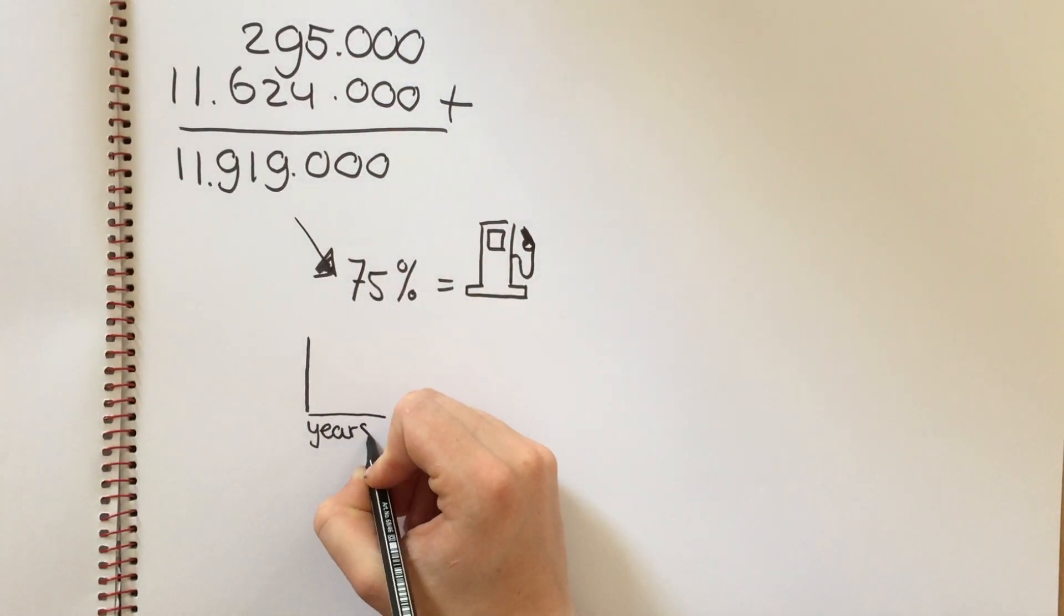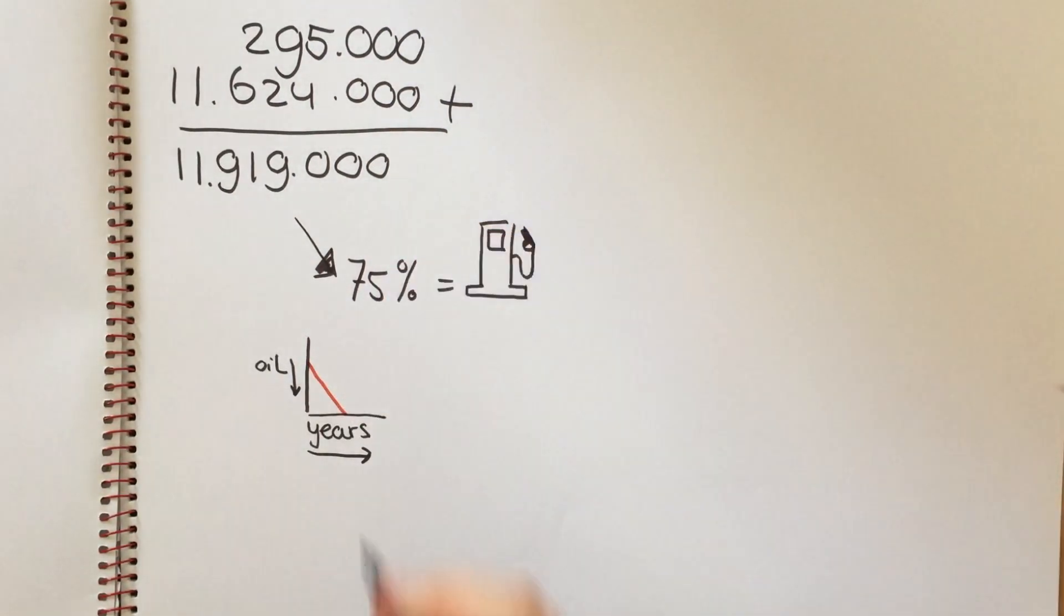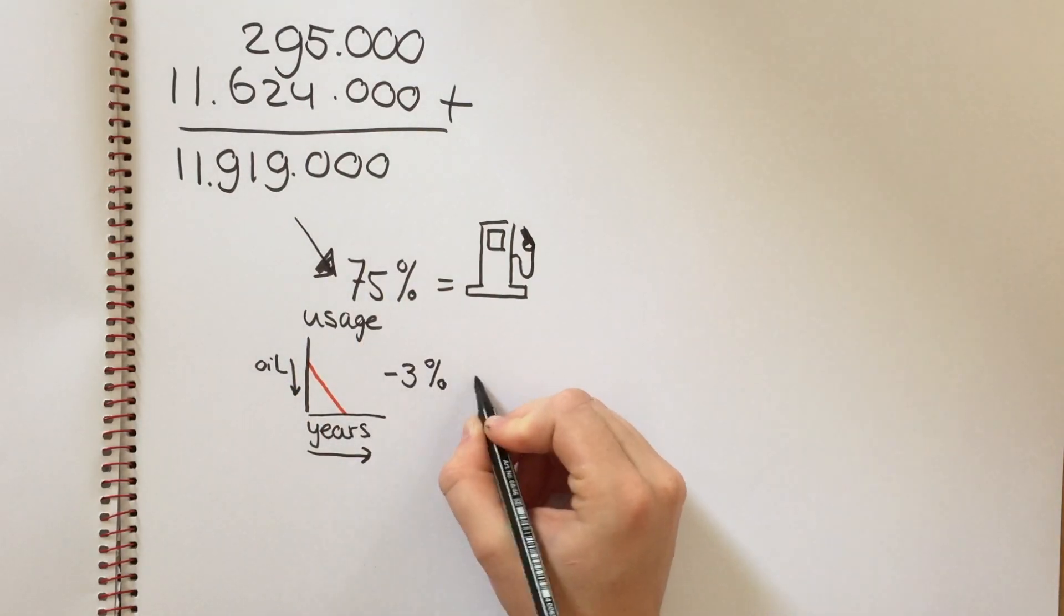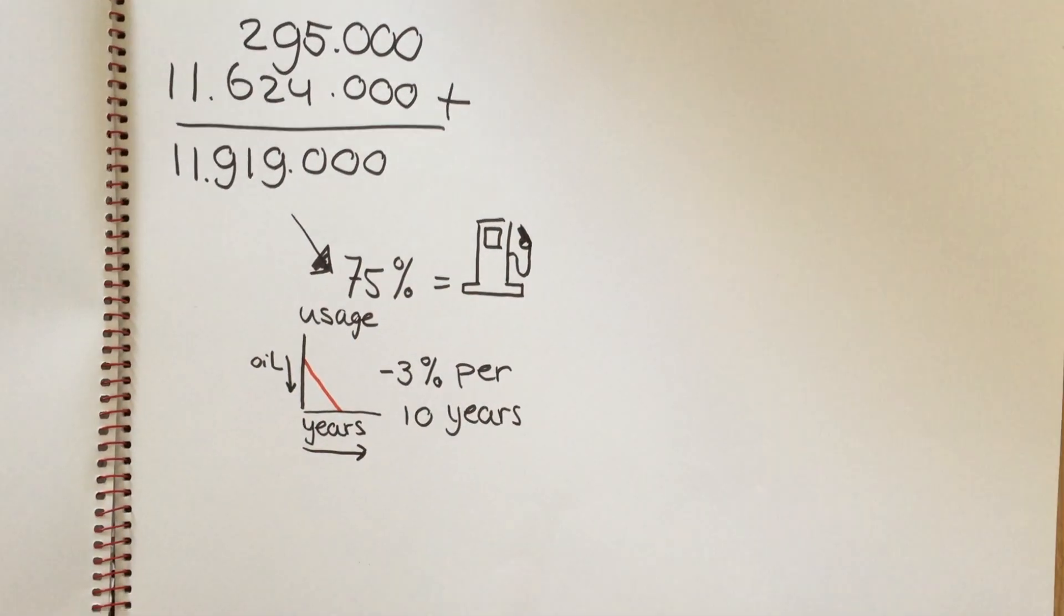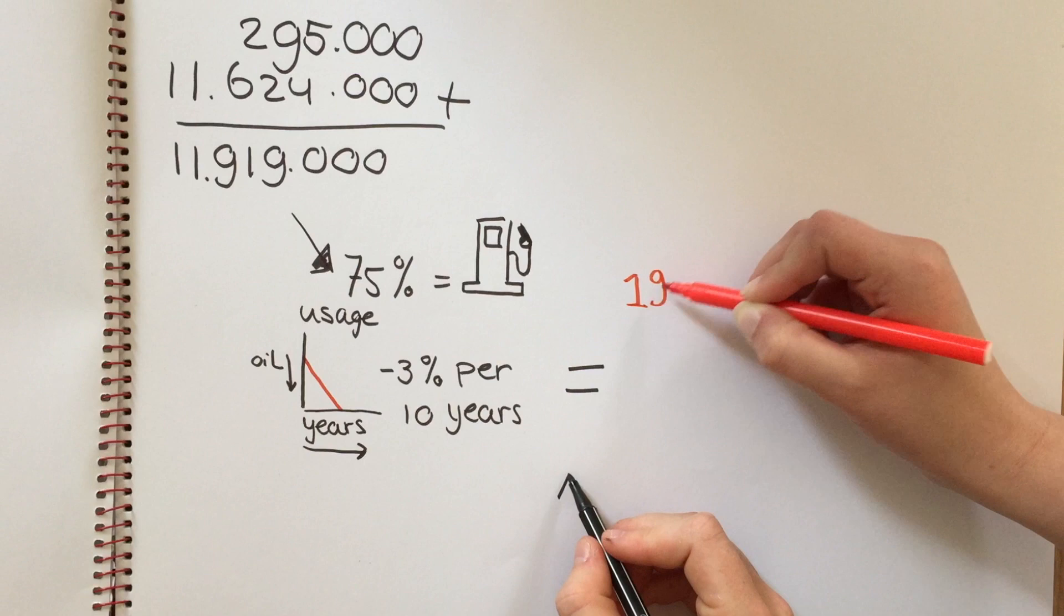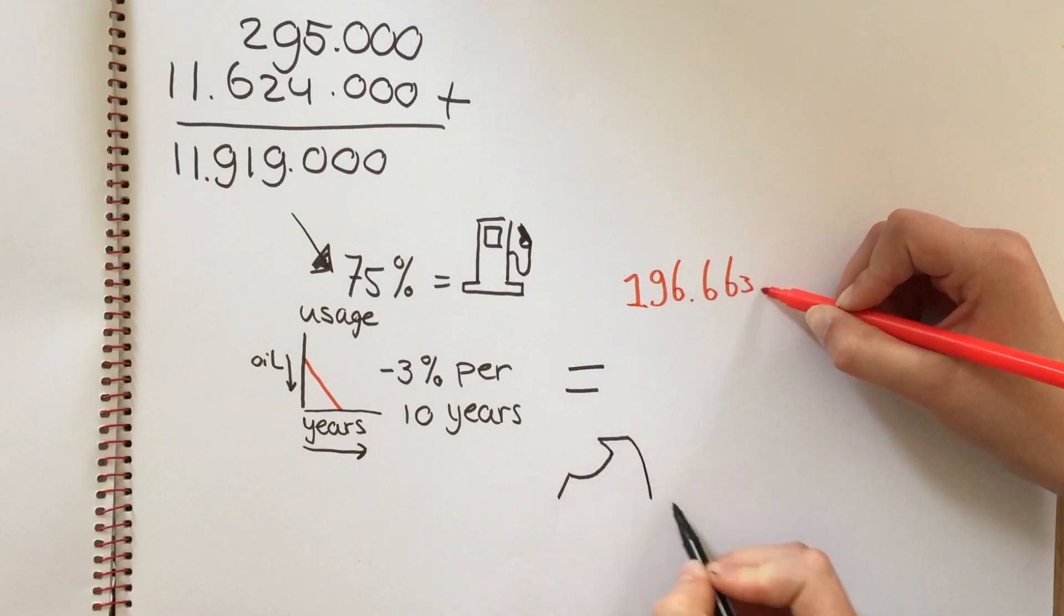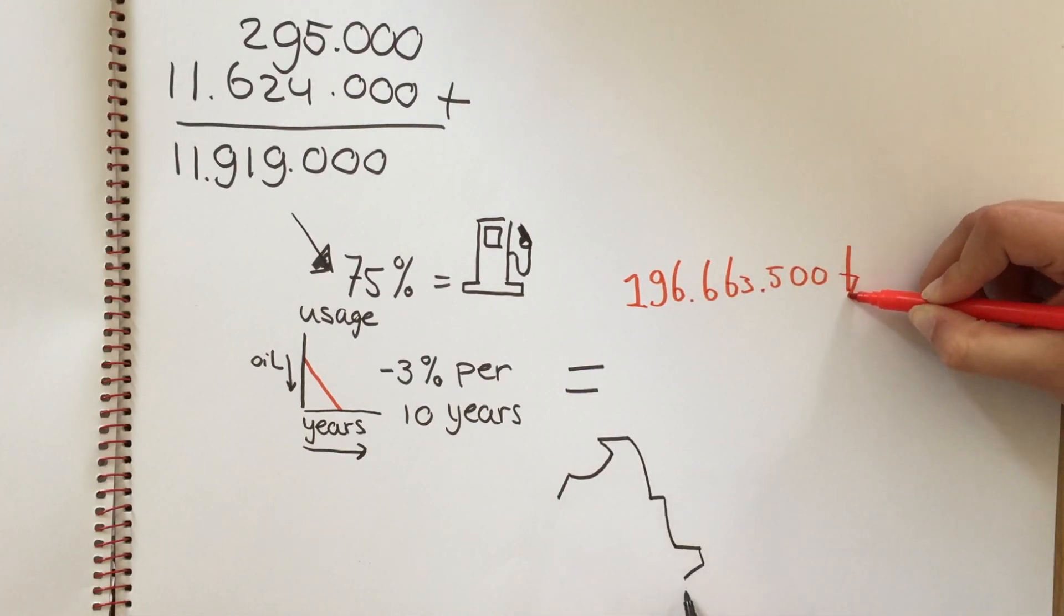Our plan is to slowly decrease the oil usage at a rate of 3% every 10 years. With an average rate of 55 euros per barrel of oil, Saudi Arabia would lose 196,663,500 euros in 10 years.